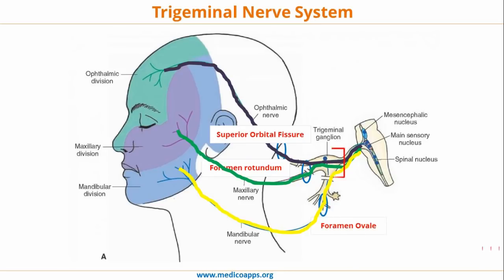All three sensory nerve components finally converge and enter the trigeminal ganglion, which is a part of the trigeminal nerve system. From the trigeminal ganglion, the nerve fibers enter into the pons in three distinct nuclei: first is the mesencephalic nucleus, second is the main sensory nucleus, and third is the spinal nucleus.